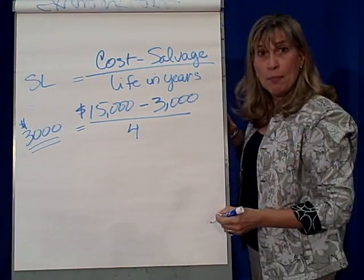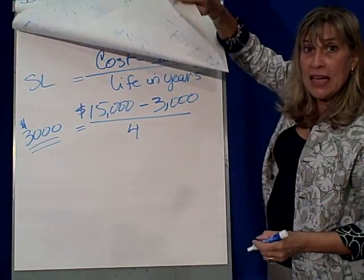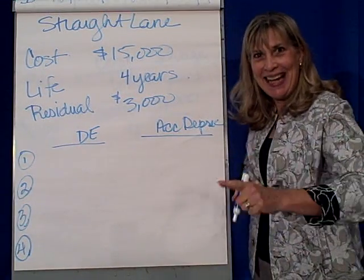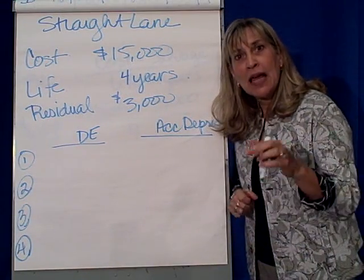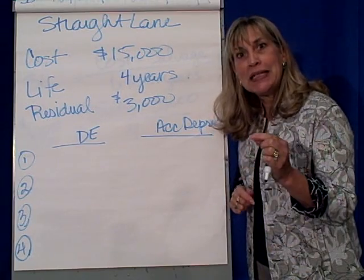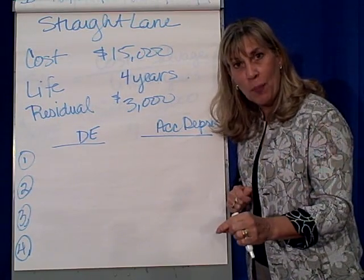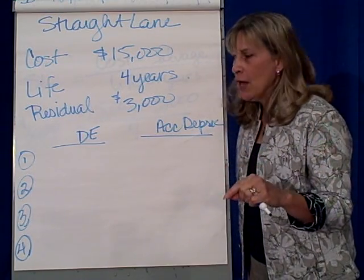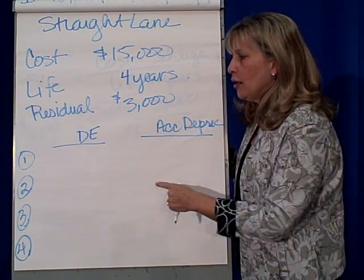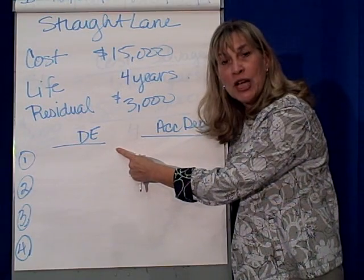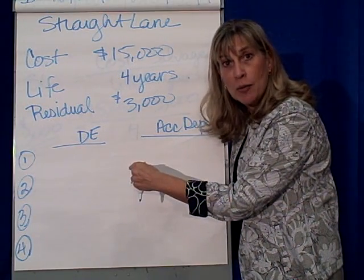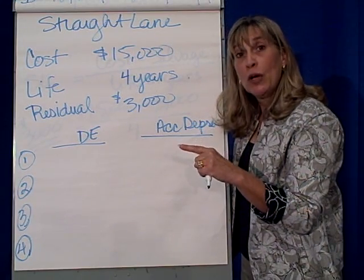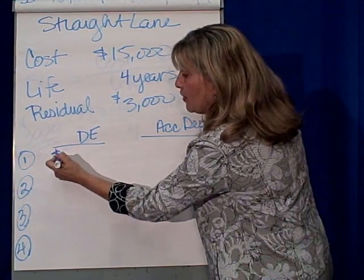So what does that mean? At the end of each full year of ownership, we're going to make that adjusting entry — the entry where we debit depreciation expense and credit accumulated depreciation. So at the end of year one, we debit depreciation expense and credit accumulated depreciation for one year's worth of depreciation, which is $3,000.